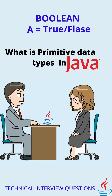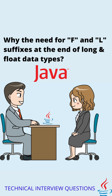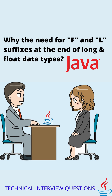Why do we use 'f' and 'l' in float and long? In float and long we use 'f' and 'l' to denote that the number in the variable is float or long type. If we do not use this, Java considers the float value as double and the long value as int.